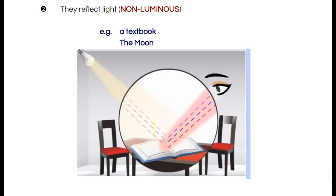The other possibility is that the object is not giving off its own light. In that case we call that object non-luminous, and the reason that we're able to see them is because they are able to reflect light.